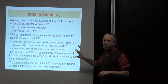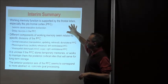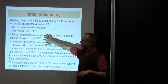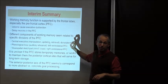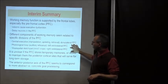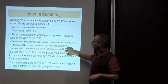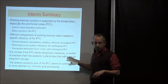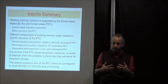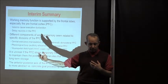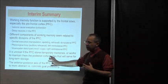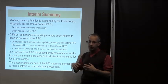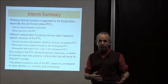Summary of brain substrates: Working memory is supported by the frontal lobes, especially the prefrontal cortex. Different components of working memory map to specific functional regions: the central executive to the dorsolateral prefrontal cortex; the phonological loop to the left ventrolateral prefrontal cortex; and the visuospatial sketchpad to the right ventrolateral prefrontal cortex. There is ongoing debate about whether the prefrontal cortex stores temporary memories or maintains them in posterior cortex, and growing evidence for an anterior-posterior abstraction gradient within the prefrontal cortex.